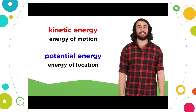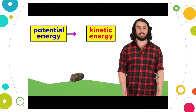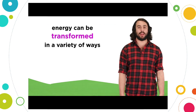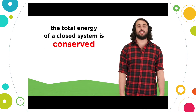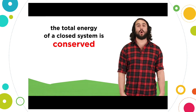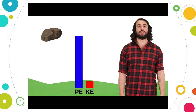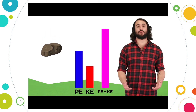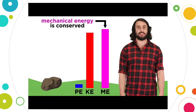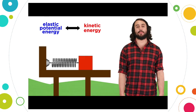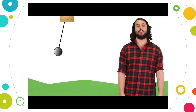We now know about kinetic and potential energy, and we know these quantities can be altered as an object moves — like the way potential energy is converted into kinetic energy when an object experiences free fall. But energy can be transformed in a variety of other ways, so we must learn about all the kinds of energy and how they transform from one to another. We must also understand that while energy can change forms, the total energy of a closed system will always be conserved. As an object falls, the sum of potential and kinetic energies — called mechanical energy — remains constant at every instant.